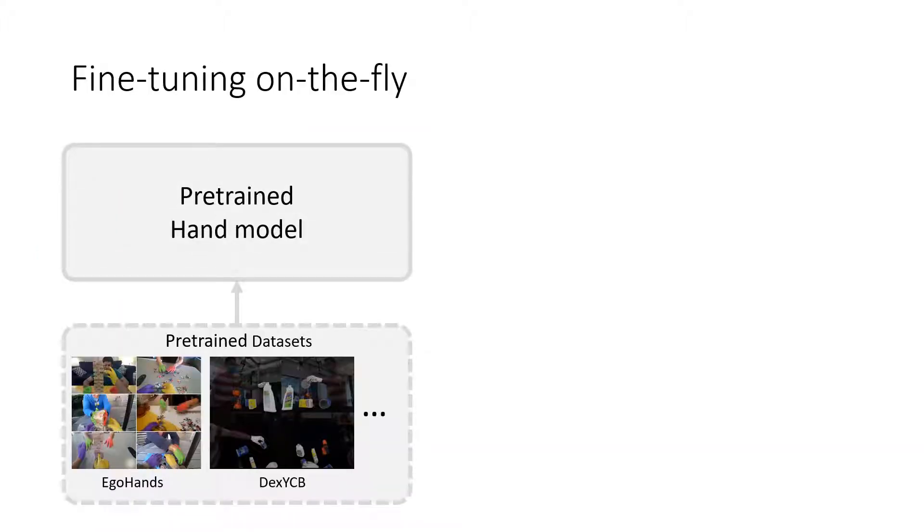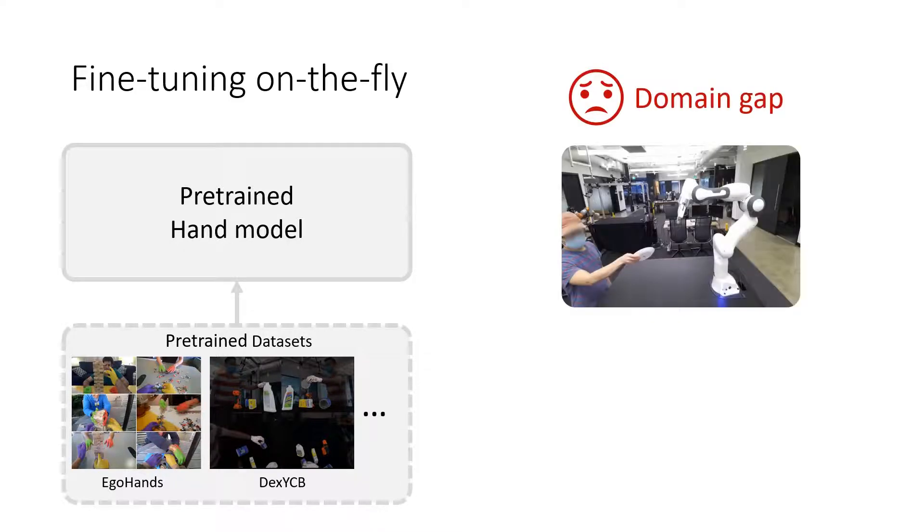When deploying the perception model, which is pre-trained on offline datasets to the real-world applications, one big issue is the domain gap between the training data and the testing data. One of the most effective ways to tackle this issue is to fine-tune the pre-trained model on annotated data that are from the testing data distribution. But how could we get the annotations?